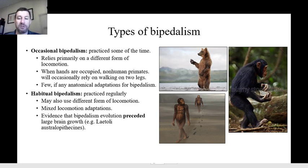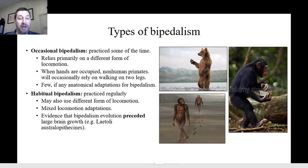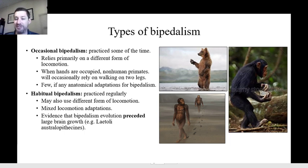Sometimes occasional bipeds will stand up when they're doing something else with their hands or front feet — they may grasp something in their front paws and then walk on two legs for a short amount of time. Because they don't do it very often, they have few or no anatomical adaptations. Occasional bipeds have the body form of a quadruped and are just able to stand up briefly.